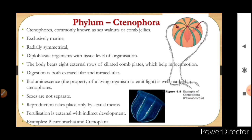The sexes are not separate — they are monoecious, meaning they are bisexual animals. Both male and female reproductive organs are present in the same individual. Reproduction takes place only by sexual means. Fertilization is external, that is outside the body, with indirect development, meaning the larval stage must reach the adult stage by the process called metamorphosis.